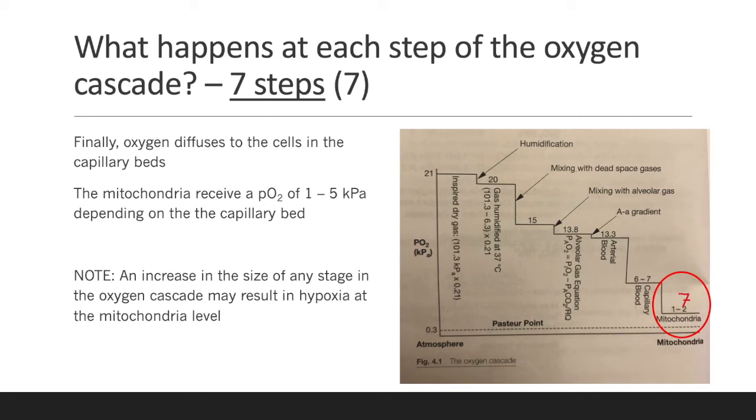It is worth noting that an increase in the size of the gradient at any stage in the oxygen cascade may result in hypoxia at the mitochondrial level.